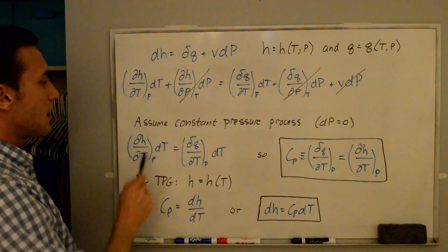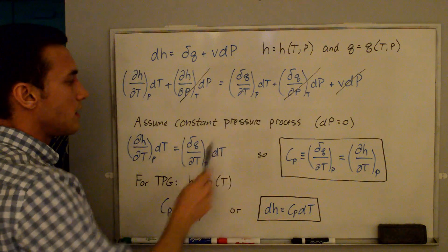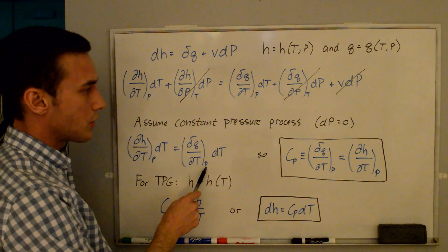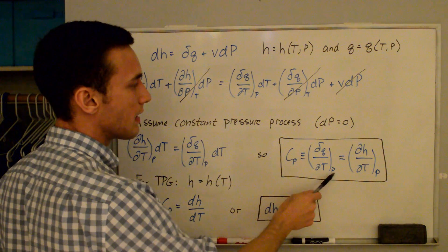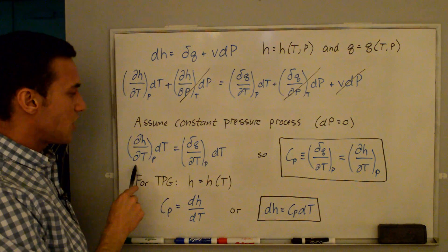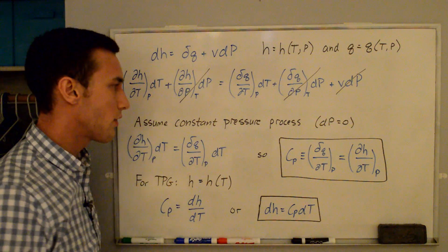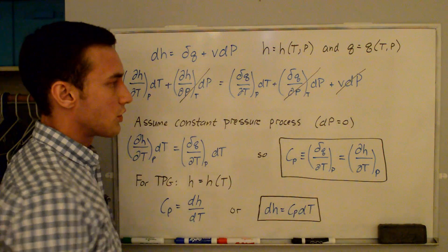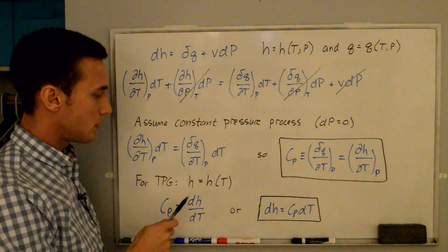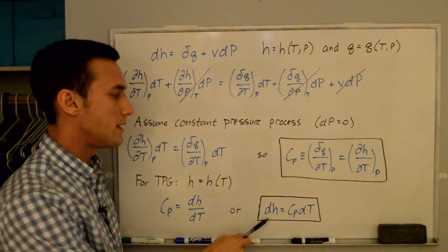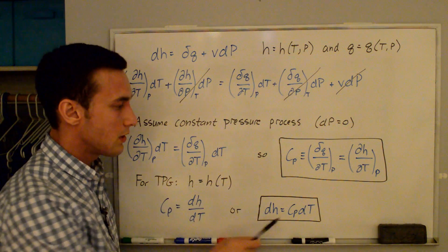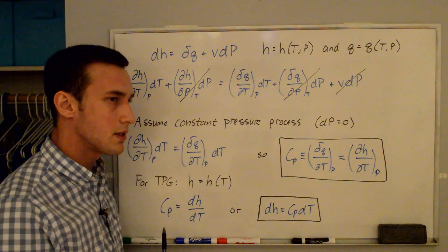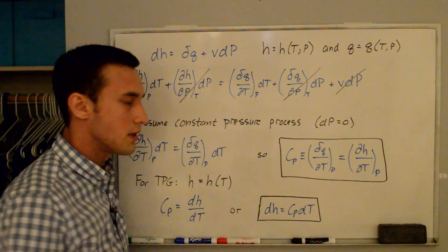We're left with dH/dT at constant p times dT equals dq/dT at constant p times dT. This dq/dT at constant p is the definition of the specific heat cp, which equals dH/dT at constant p. For a thermally perfect gas, enthalpy is also only a function of temperature, so partial derivatives become normal derivatives: cp equals dH/dT, or rearranging, dH equals cp dT. For a thermally perfect gas cp is still a function of temperature; for a calorically perfect gas, cp is constant.